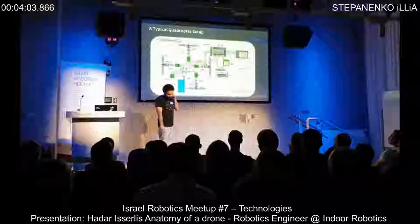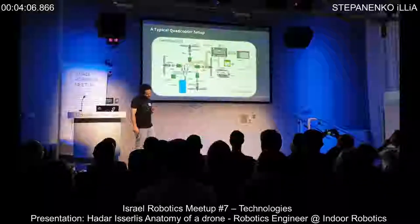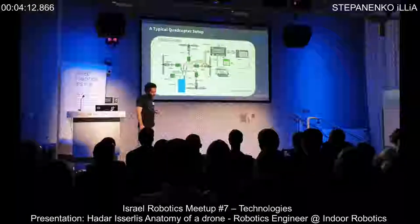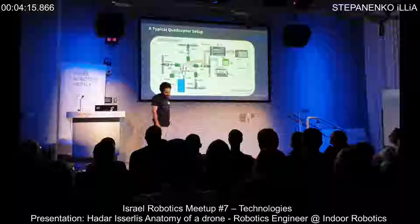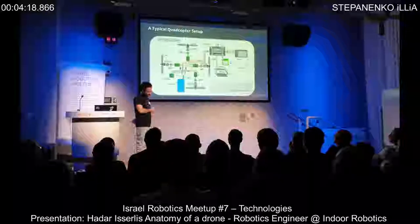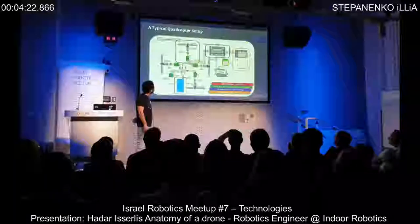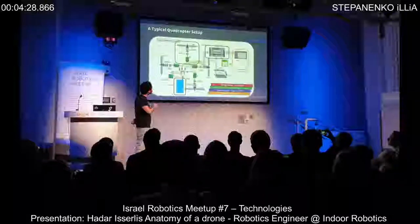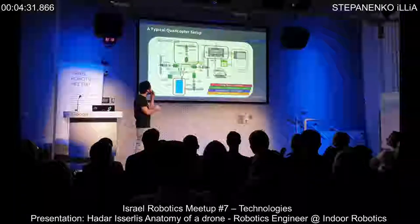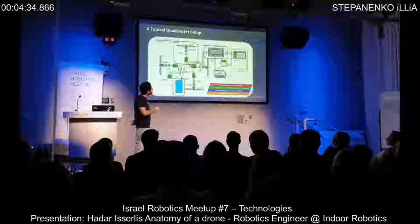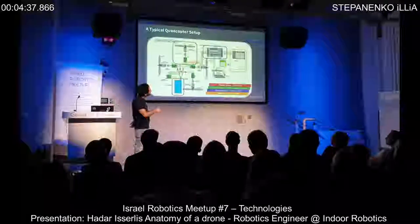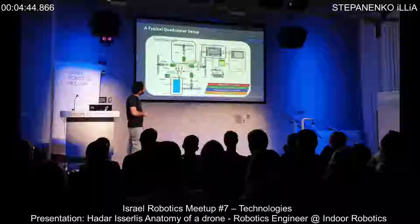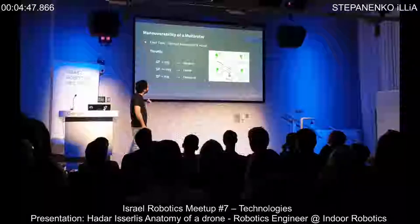Let's build a drone. First I want to show you a typical quadcopter setup. It is built of four main components: an energy source — the battery; something that drives it; a processing unit, which we'll talk about in detail; and a device that gives the processing unit its commands.